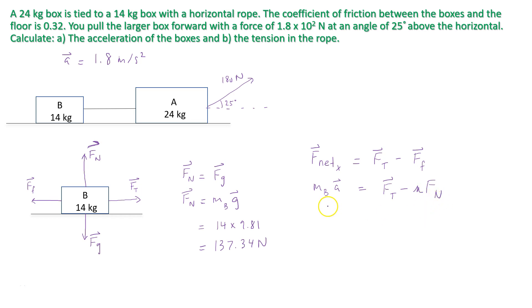Now I'm going to substitute in the given values. So the mass of box B is 14. So 14 times the acceleration from part A, 1.8